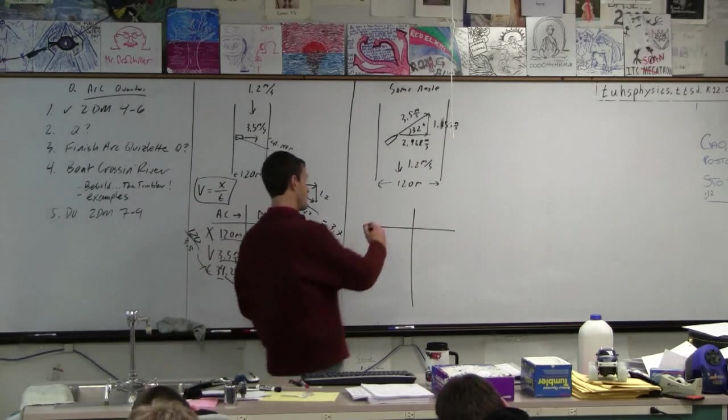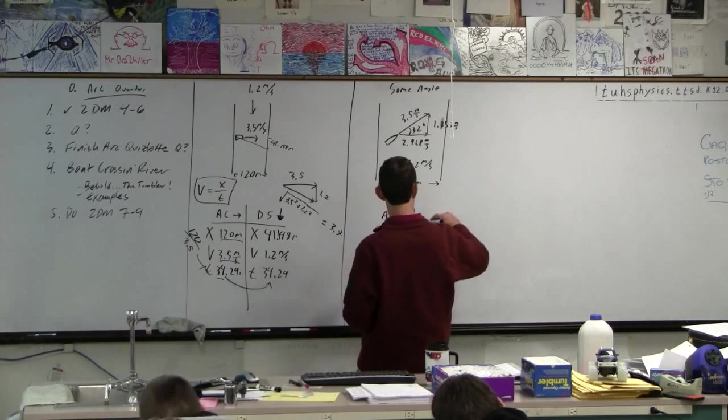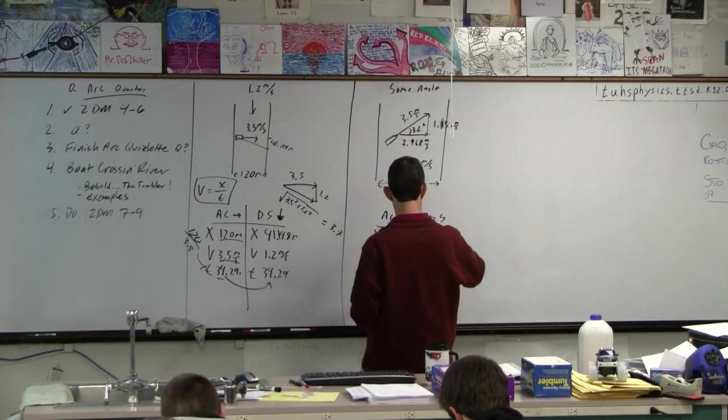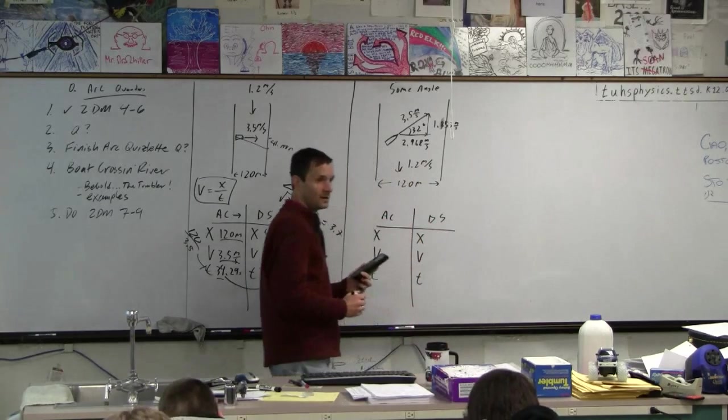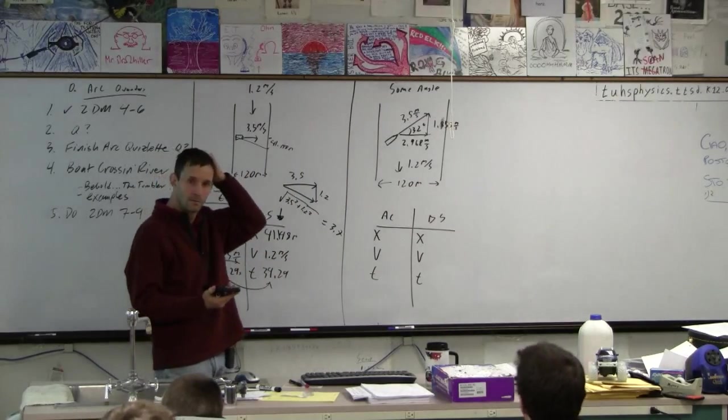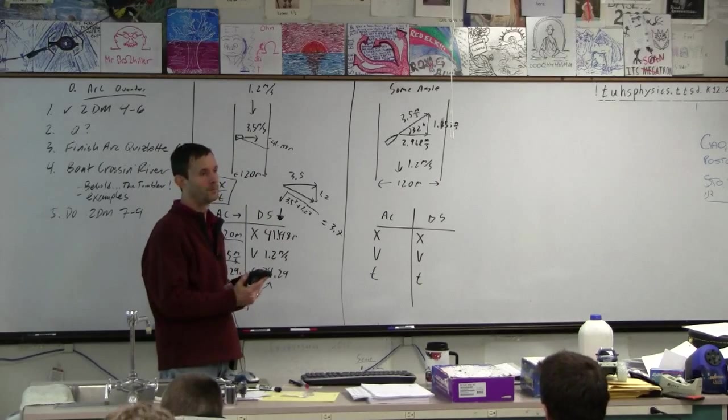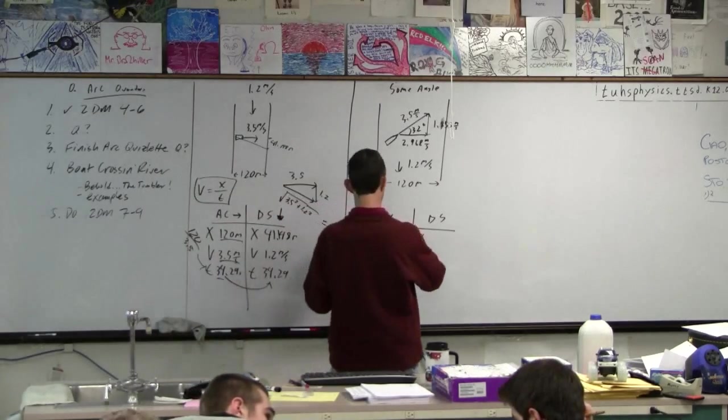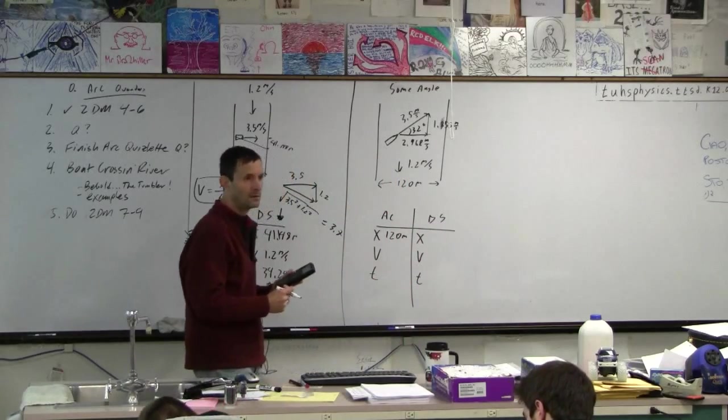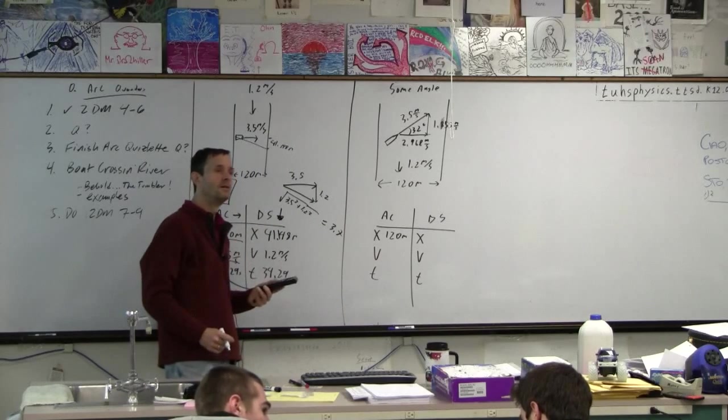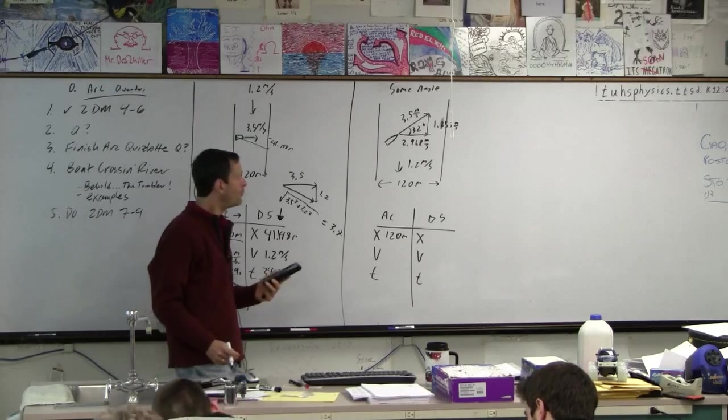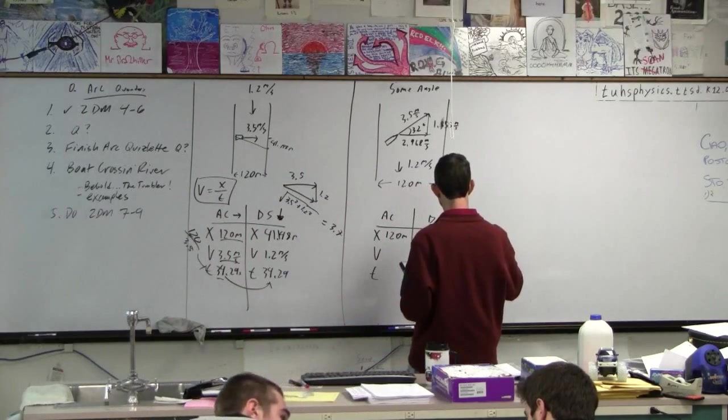So 3.5 sine 32 gives us that, right? And then we're going to do the same thing, right? We're going to go across and downstream. And x. And v. And t. And x. And v. And t. And who knows where anything goes. Yeah, cross distance is 120. Definitely. Yeah, Matthew. Never mind. 1.2 is one of them, right? So we got 1.2 downstream.